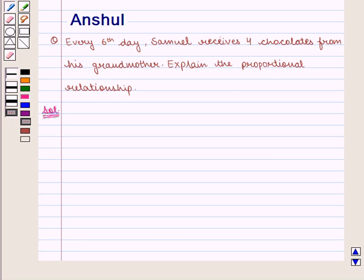Let us start with the solution. In this question we are given that Samuel receives four chocolates in every six days. That is, Samuel receives four chocolates in every six days.